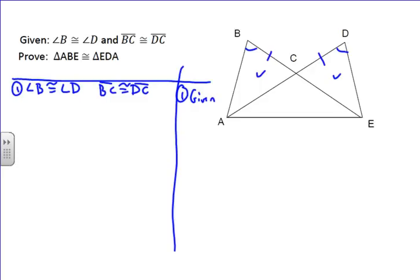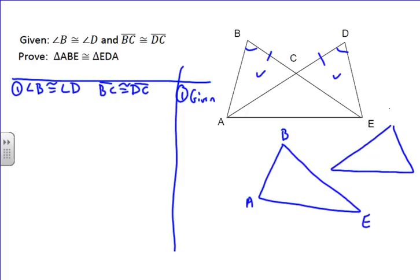And what we're trying to prove is actually things about the big triangles, ABE and EDA. So, sometimes it's helpful to actually pull those out, look at it like this, ABE, and then over here we can look at DEA.